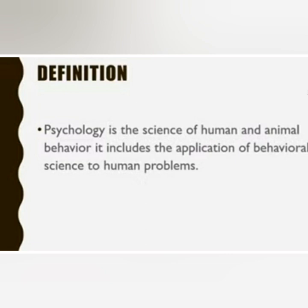Now come to the definition. Psychology is the science of human and animal behavior; it includes the application of behavioral science to human problems. So psychology basically kya hai — ek science hai jisme humne study karni hai human and animal behavior.